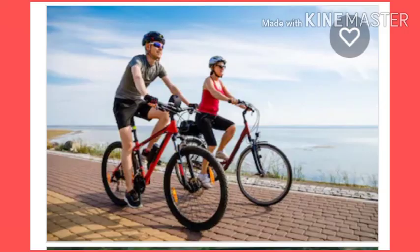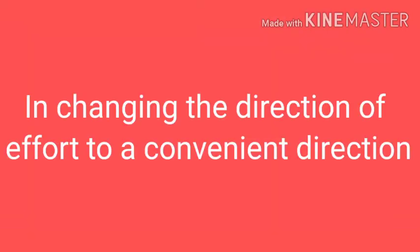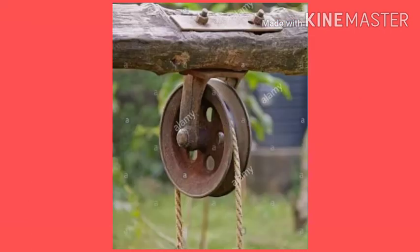Second use — gain in speed. A simple example: I have to go to my friend's place, so I use a bicycle. A bicycle is a machine. With it, I reach faster than walking all the way to his place.